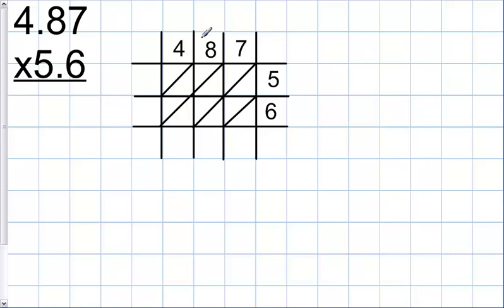I'm multiplying decimals using lattice multiplication. The problem is 4.87 times 5.6, but I'm going to work with 487 times 56 first, ignoring the decimals for now, and then I'll revisit them in just a moment.